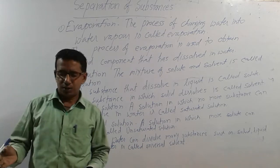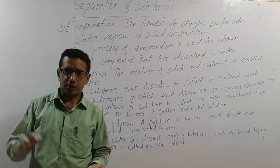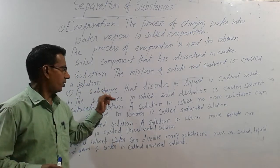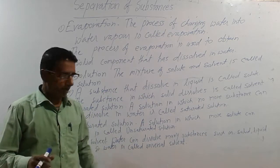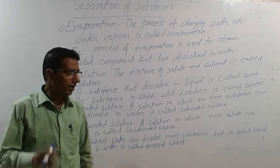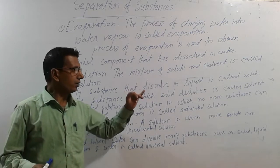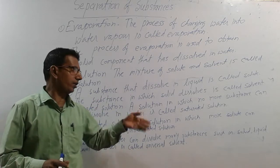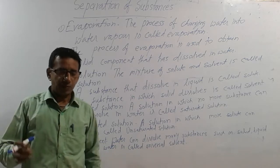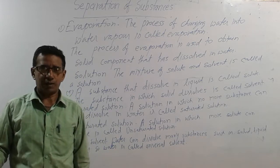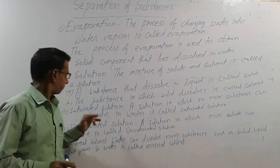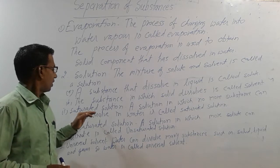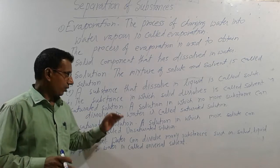For example, sugar dissolves in water. The substance that dissolves in liquid is called solute, so here sugar is the solute. The substance in which the solid dissolves is called solvent, so here water is the solvent.